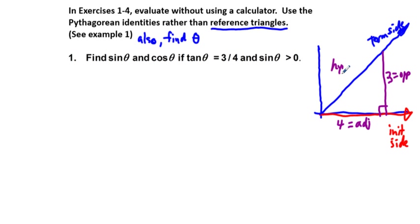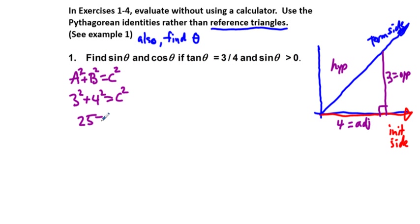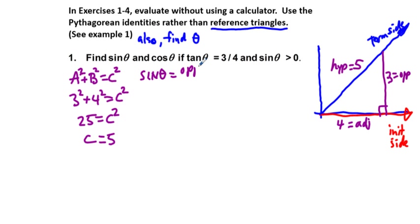Using the Pythagorean theorem — a squared plus b squared equals c squared — we have three squared plus four squared equals c squared, giving us 25 equals c squared, so c equals 5. If you're familiar with the 3-4-5 right triangle, this is no mystery. Sine equals opposite over hypotenuse, so sine theta equals three over five.